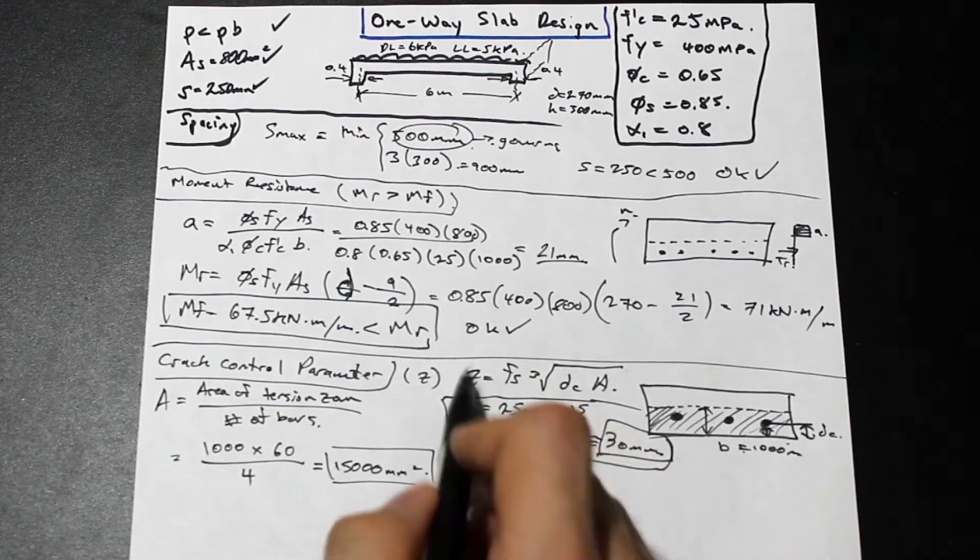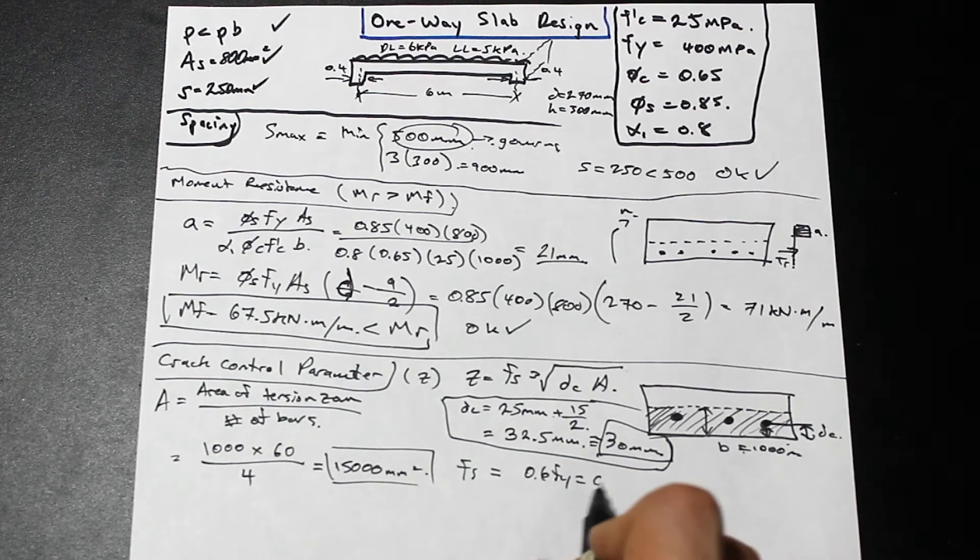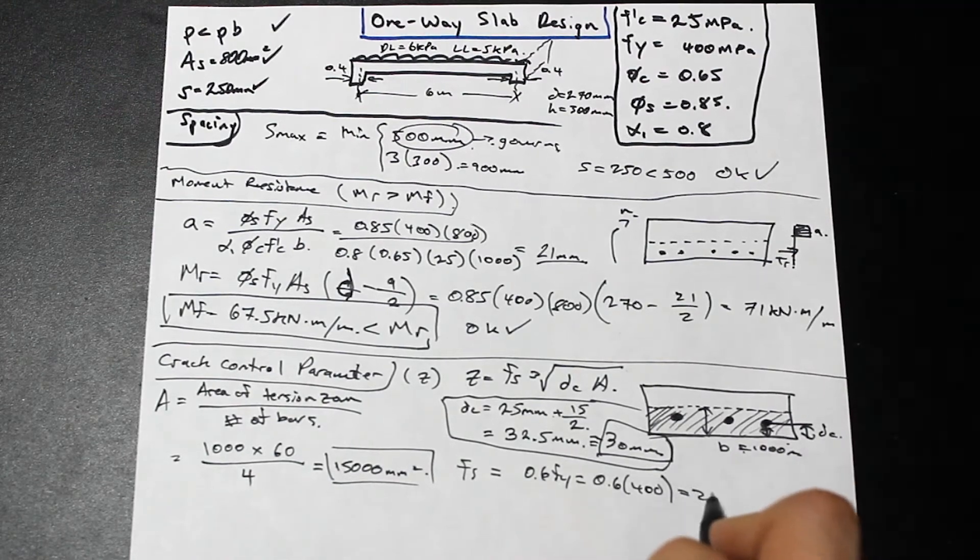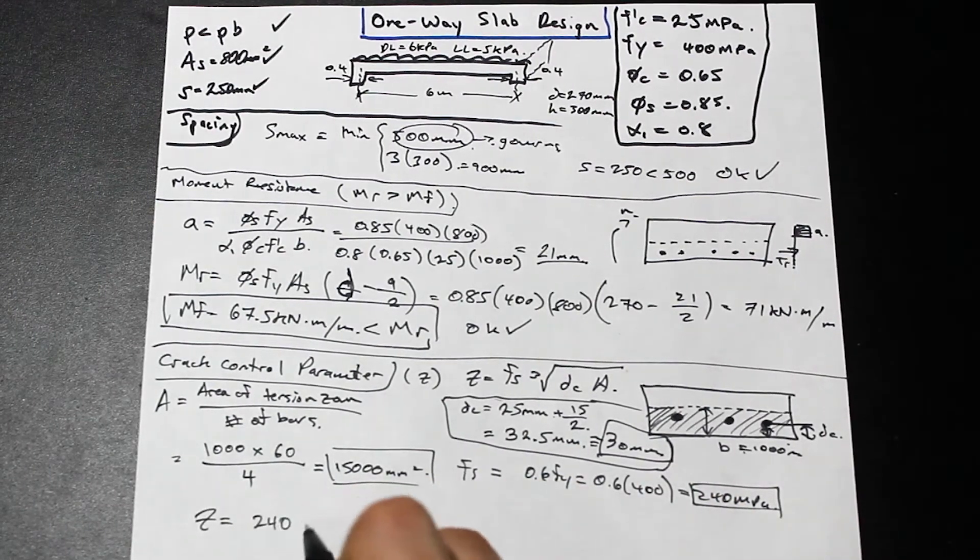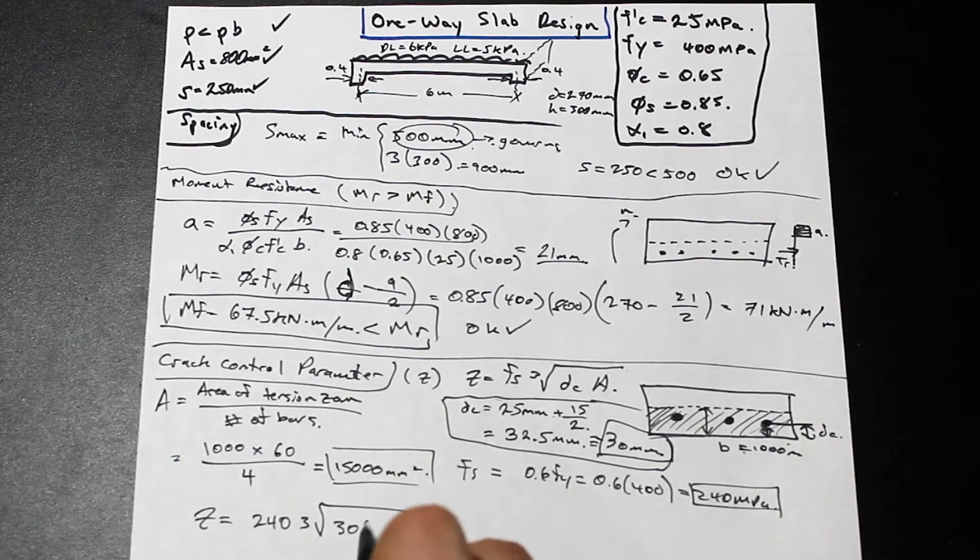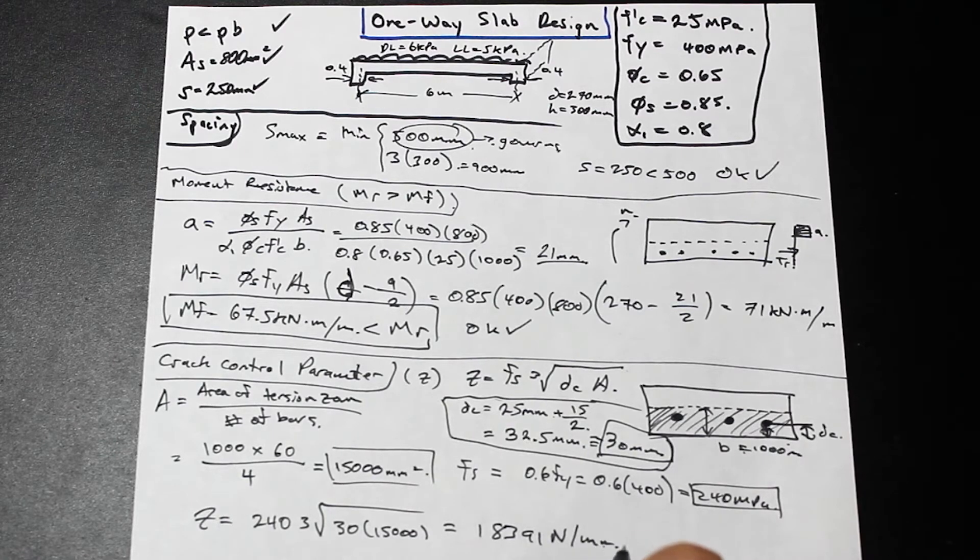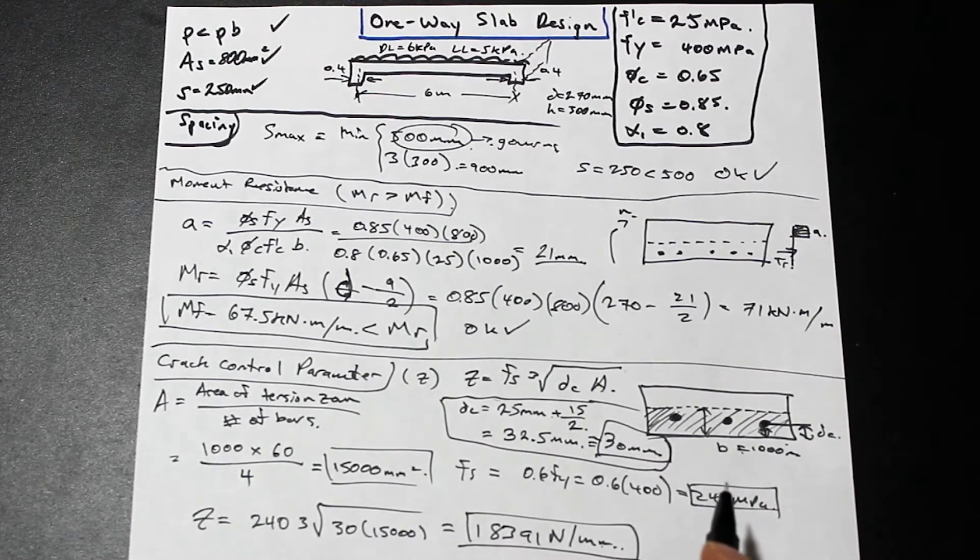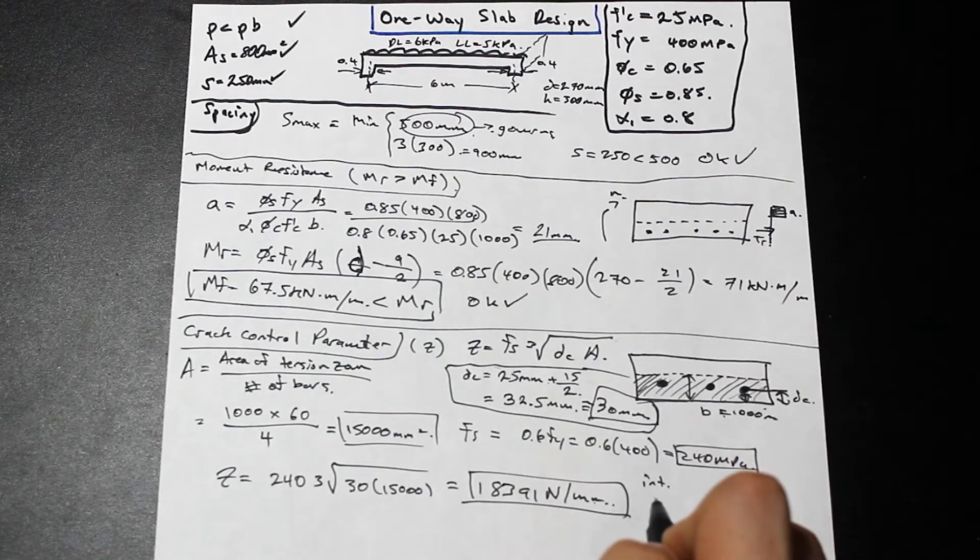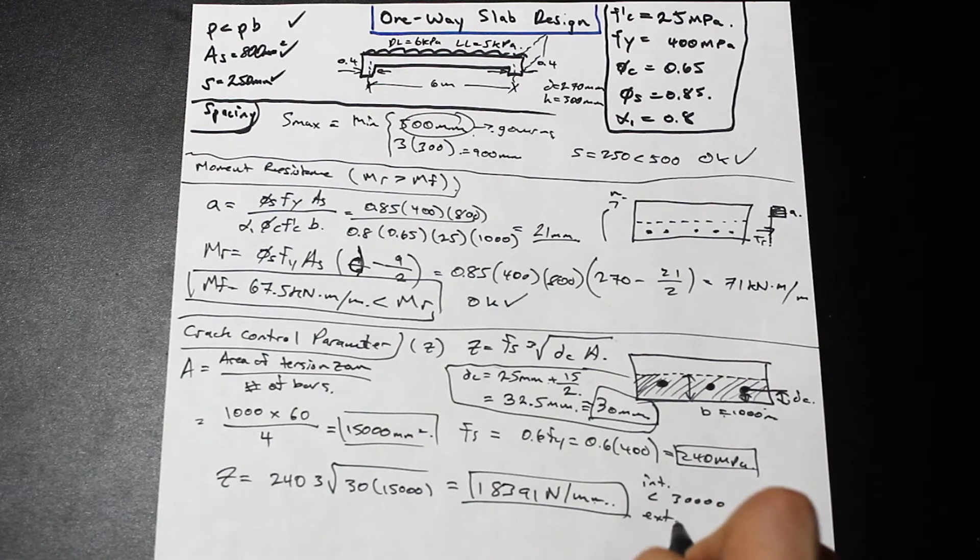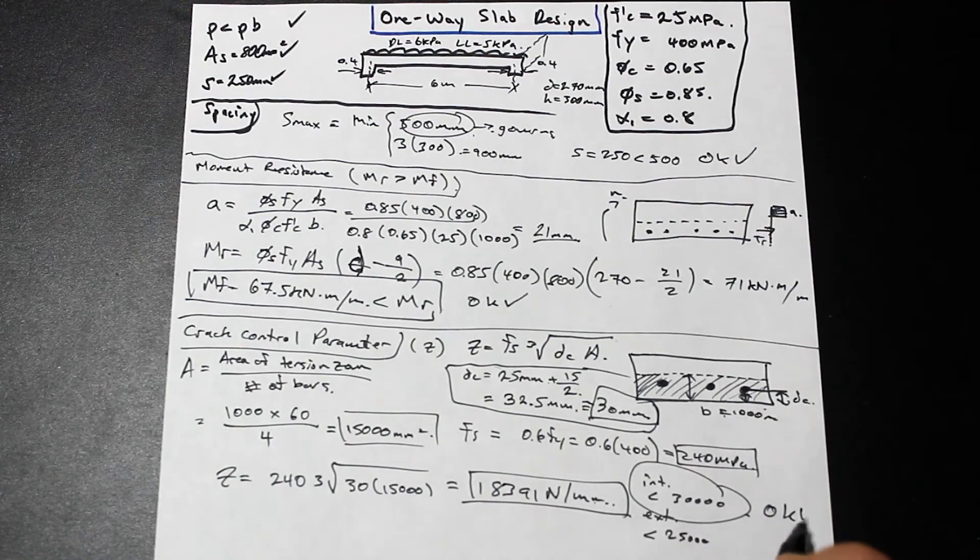We have almost everything we need to check the crack control parameter, we just need fs. fs is simply 0.6 fy, and that's 0.6 times 400, which equals 240 MPa. Now we can plug into this formula and get our z value. z is simply going to be 240 times the cube root of dc, dc is 30, times 15,000. We're going to get a value of 18,391 newton per millimeter. We need to compare it to our exposure. The Canadian code says that for an interior exposure, this must be less than 30,000. For exterior exposure, it needs to be less than 25,000. It's actually less than both of these, and it is an interior exposure. So we're okay for crack control.